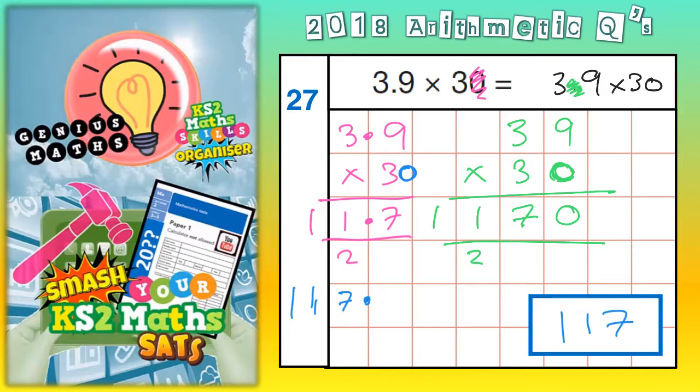3.9 is ten times smaller than 39. So, if you put your decimal point back in, to make the 39 ten times smaller, you need to put your decimal point back in on the answer. And, ten times smaller than 1170 is 117.0.